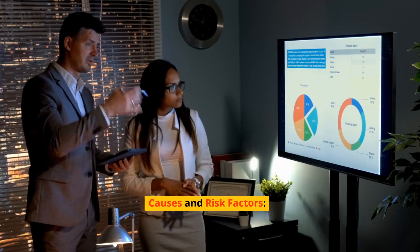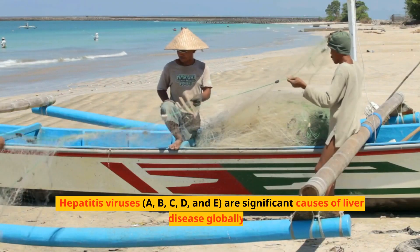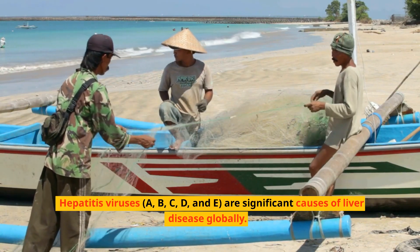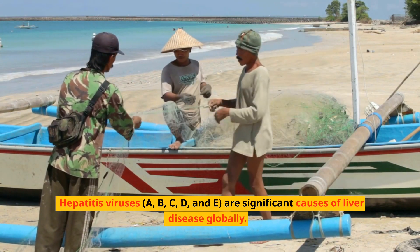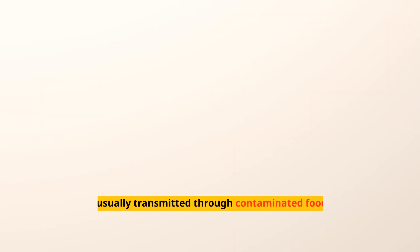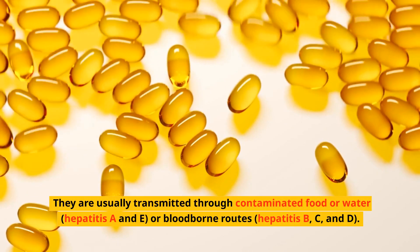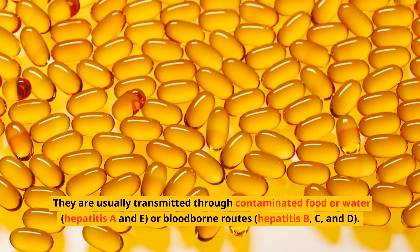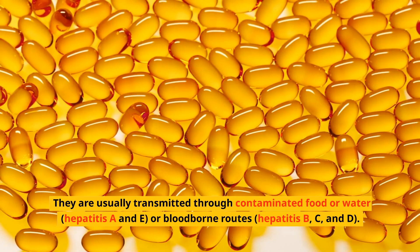Causes and risk factors. Viral infections: hepatitis viruses A, B, C, D, and E are significant causes of liver disease globally. They are usually transmitted through contaminated food or water (hepatitis A and E) or blood-borne routes (hepatitis B, C, and D).